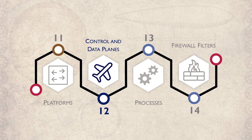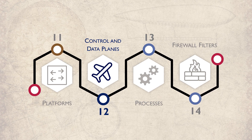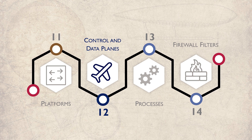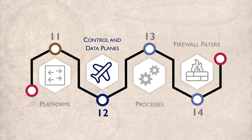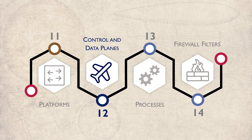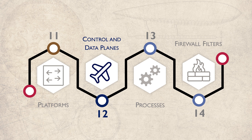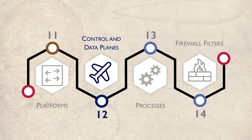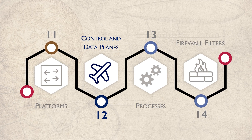You've probably heard about control and data planes before. Juniper was one of the companies that pioneered these concepts, and they do an amazing job of putting it into practice. This video will discuss what these planes are and how they're used in a practical sense.